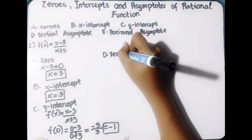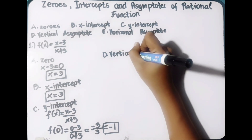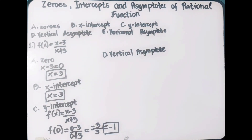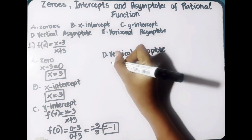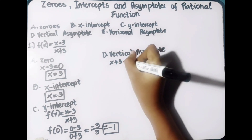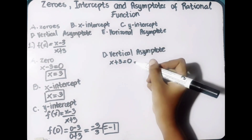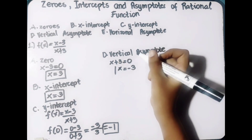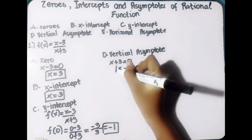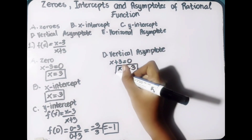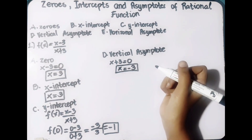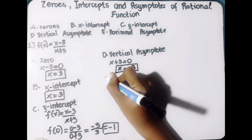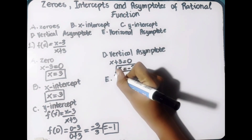Next is the vertical asymptote. To solve this, we equate the denominator to zero. x plus 3 equals zero, so x equals negative 3. Therefore, the line x equals negative 3 is a vertical asymptote of the graph of f of x.